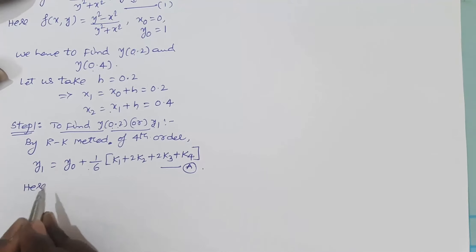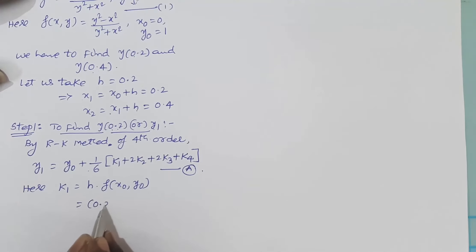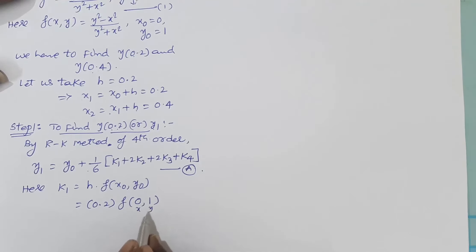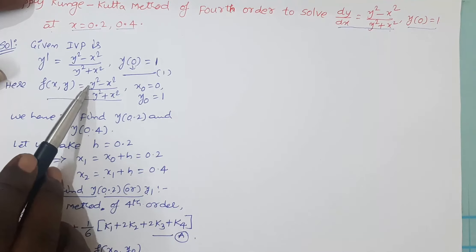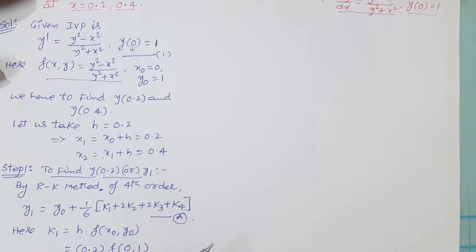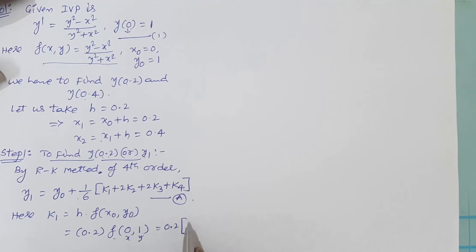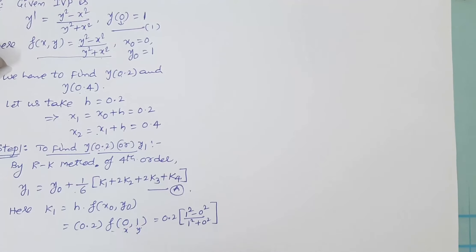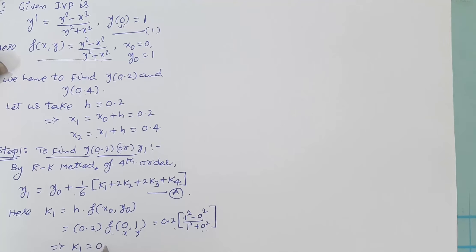What is the formula for k₁? k₁ = h · f(x₀, y₀). h = 0.2, x₀ = 0, and y₀ = 1. Replacing these in f(x, y) = (y² - x²)/(y² + x²), we get 0.2 × (1² - 0²)/(1² + 0²) = 0.2 × (1/1) = 0.2. So k₁ = 0.2.